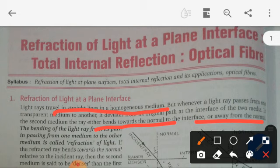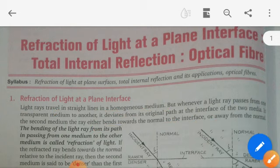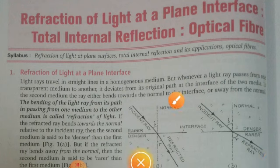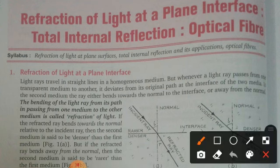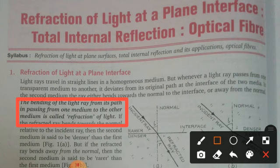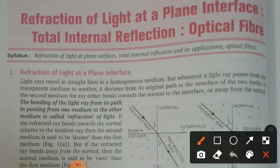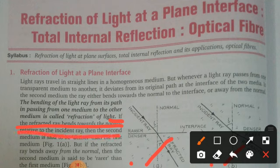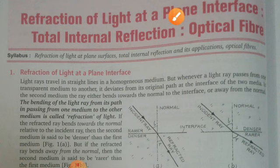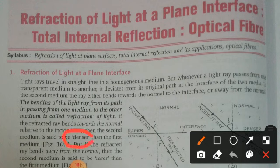This is the simple basic law of refraction you have already studied in your previous classes. The bending of a light ray from its path in passing from one medium to another medium is known as the refraction of light. If the refracted ray bends towards the normal relative to the incident ray, then the second medium is said to be a denser medium.